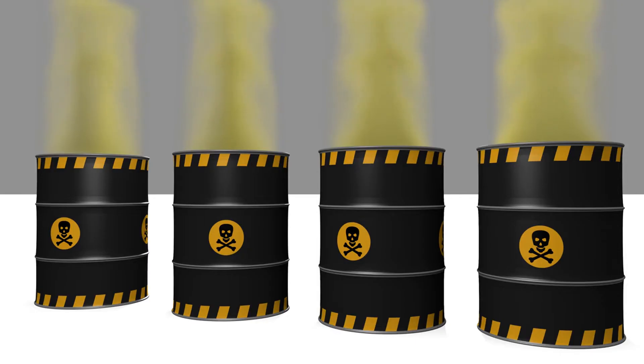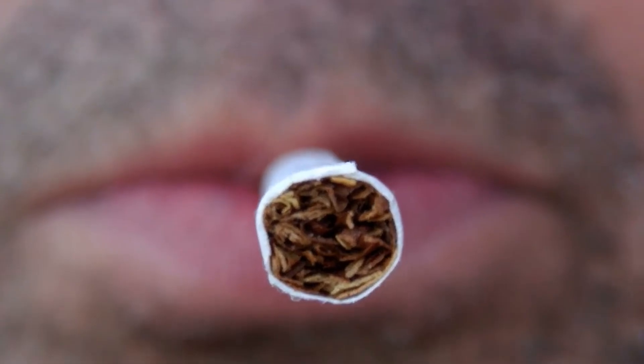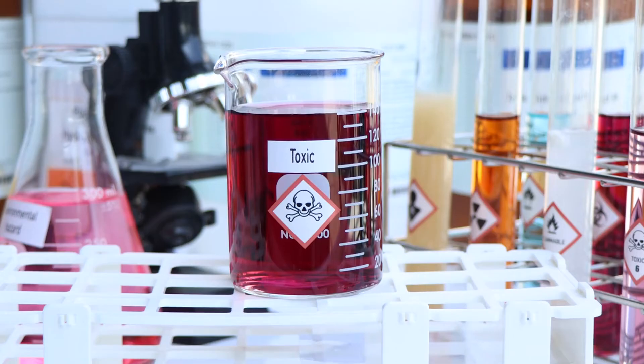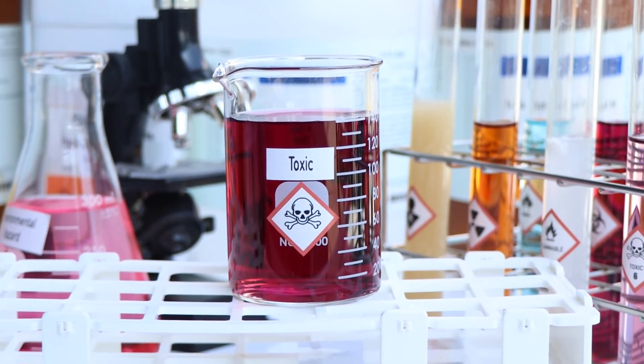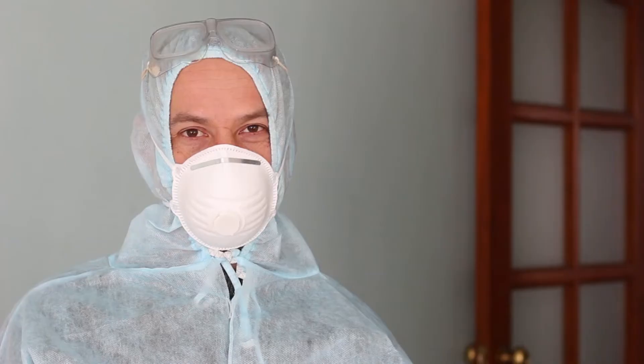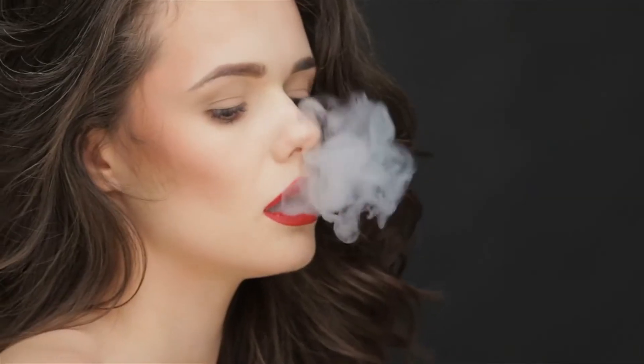Toxicodynamics also considers factors like exposure duration and timing. Acute exposure refers to short-term, high-dose exposure to a toxin, while chronic exposure involves long-term, lower-dose interaction. The effects of these exposures can vary significantly, emphasizing the importance of context when evaluating toxicity. For instance, a substance that is relatively harmless in small, occasional doses may become detrimental with prolonged exposure. Understanding these nuances helps public health officials create better guidelines for preventing toxic exposures.